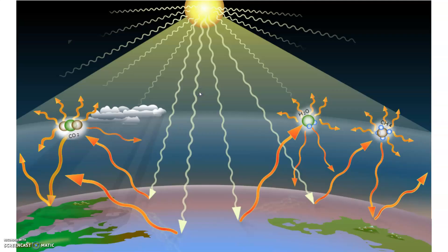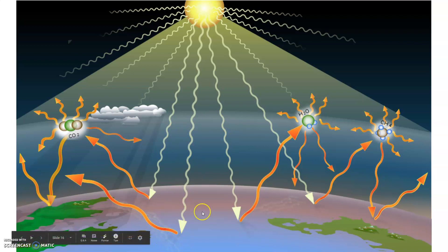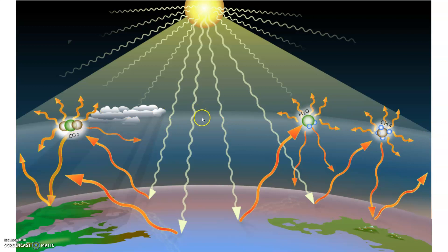Greenhouse gases work by trapping in heat. We start off with sunlight, which contains all different types of radiation — visible light, ultraviolet radiation, and infrared radiation. The ground absorbs that and then releases infrared radiation, which would normally float back out into space. However, greenhouse gases bounce it back to the Earth, so if there are more greenhouse gases, there's more heat being reflected back to Earth.